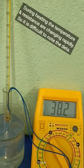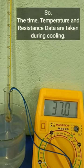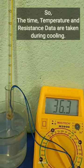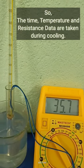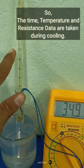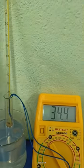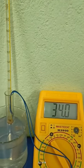Plot graph between ln R equals Y and 1 slash T equals X. The straight line graph Y equals MX plus C would be obtained. This is calibration curve for the given thermistor. It may be different for different thermistors.